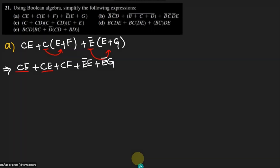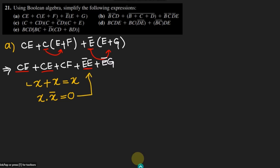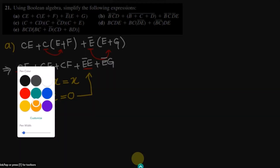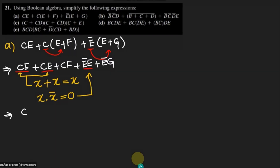We can see that this term and this term are two similar terms. Similarly, here also these two terms — one of them is the complement of the other. We know that according to Boolean algebra, x plus x is always equal to x, and similarly x dot x prime is always equal to 0. Applying these theorems, we will have CE — these two similar terms reduce to one — and similarly CF, and here we will have 0 and E prime G.